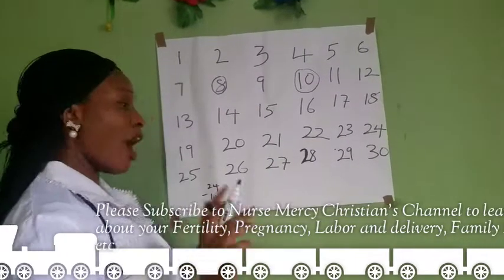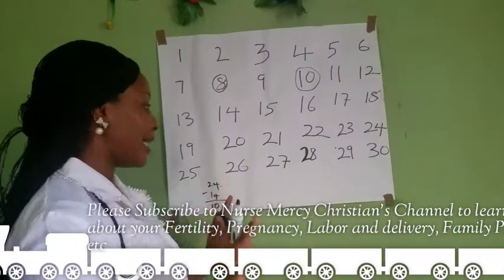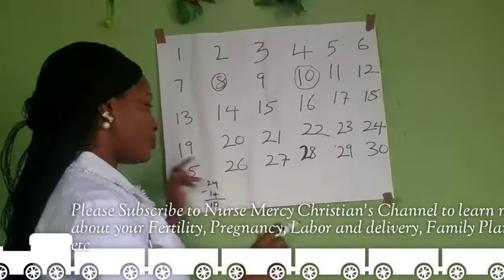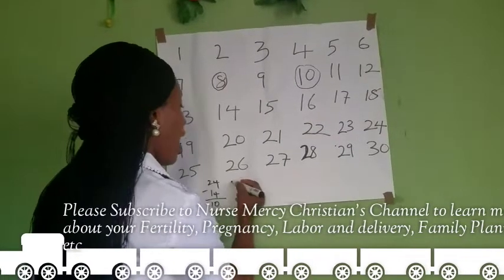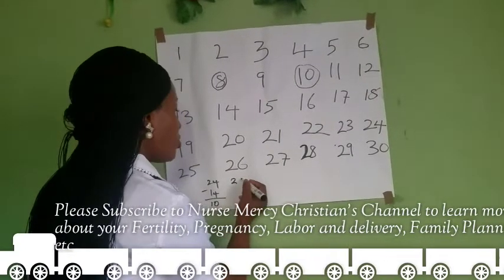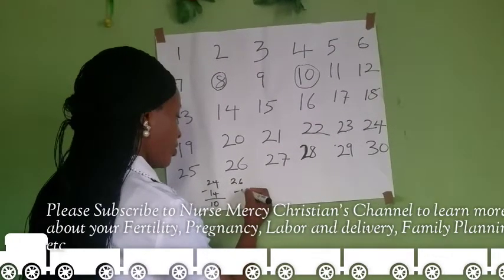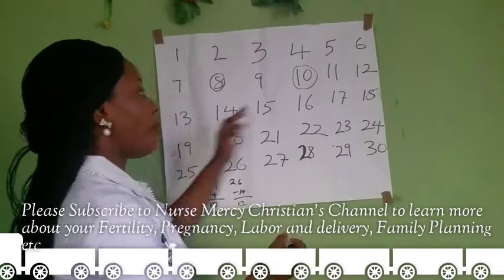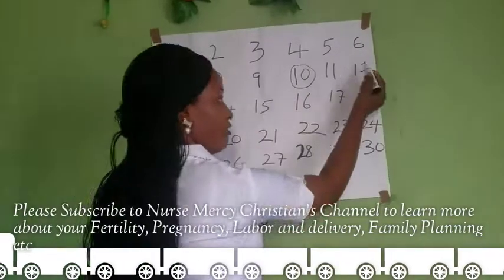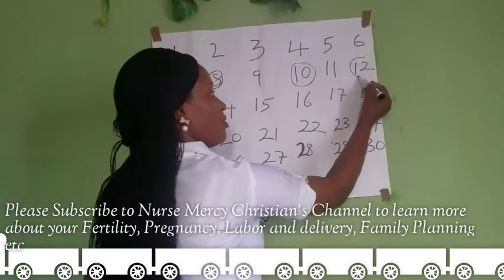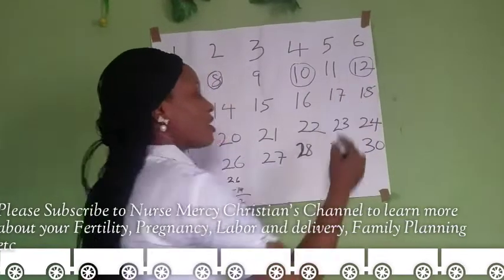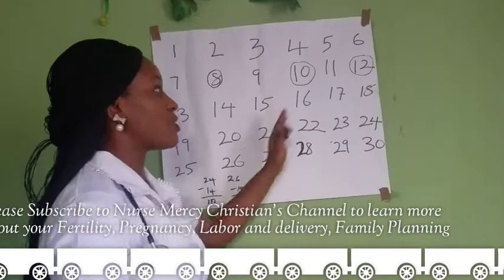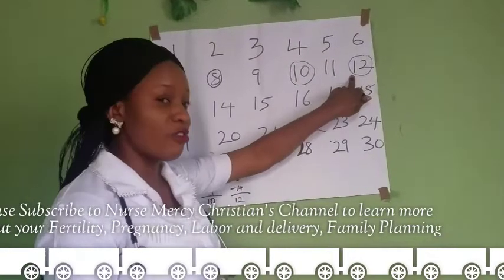If you have a 26-day menstrual cycle, subtracting 14 from 26 gives you 12. That means a lady with a 26-day menstrual cycle sees her ovulation on day 12.